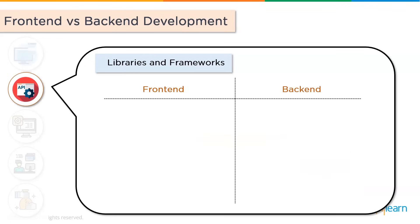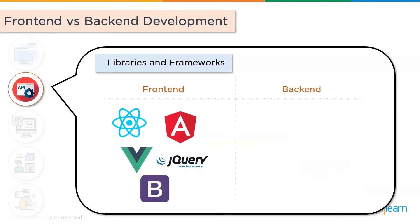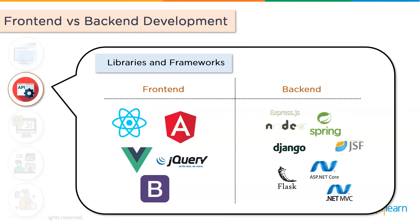Talking about libraries and frameworks, front end libraries and frameworks include React.js, Angular, Vue, jQuery and Bootstrap. For back end frameworks, we have Express.js, Node, Spring, Django, Flask, JSF, ASP.NET and .NET MVC. Front end and back end developers work very closely, so it's helpful to have a foundational understanding of front end developer technologies like HTML and CSS as well.